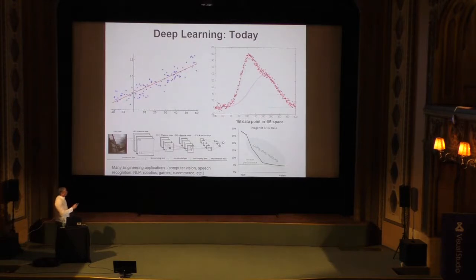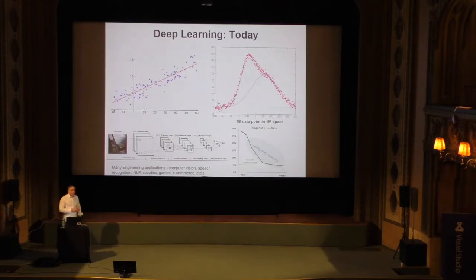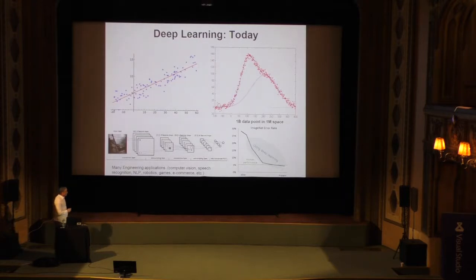So everything about machine learning is essentially contained in this slide. What we're doing today is, in many ways, linear regression on steroids — because we're trying to fit surfaces and curves that are not linear, and that are very often in high-dimensional spaces. If you're dealing with images, it's not uncommon to have 1 billion images of size 1 million.